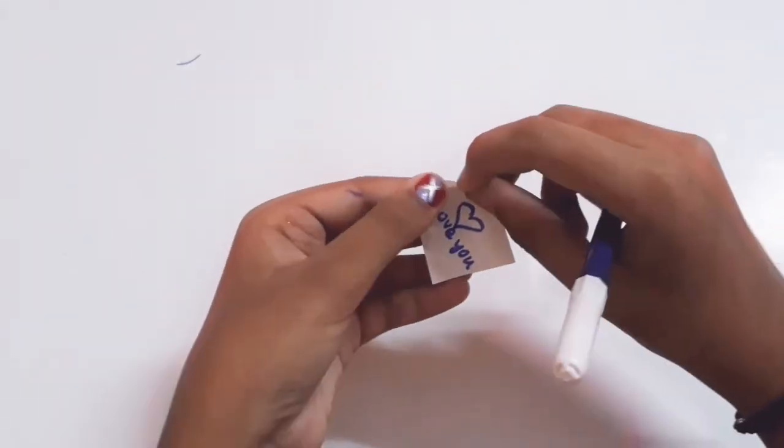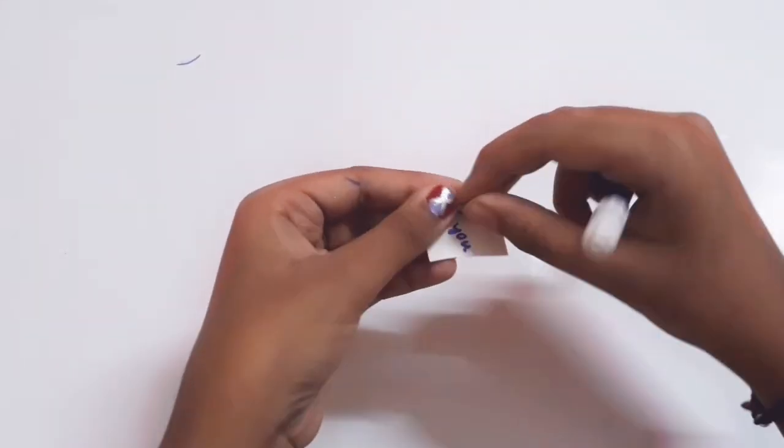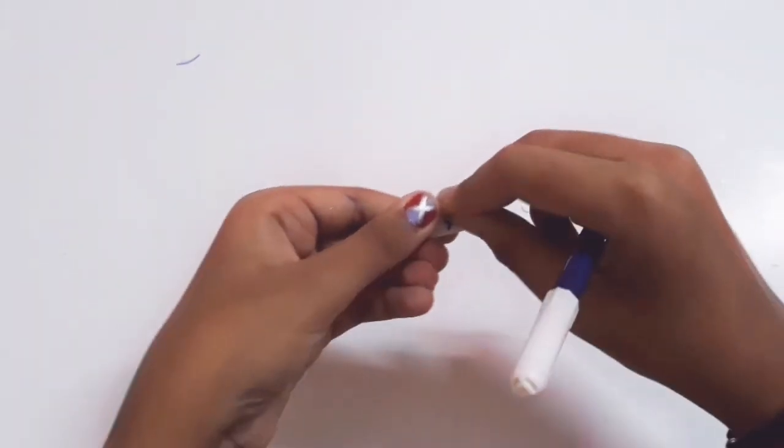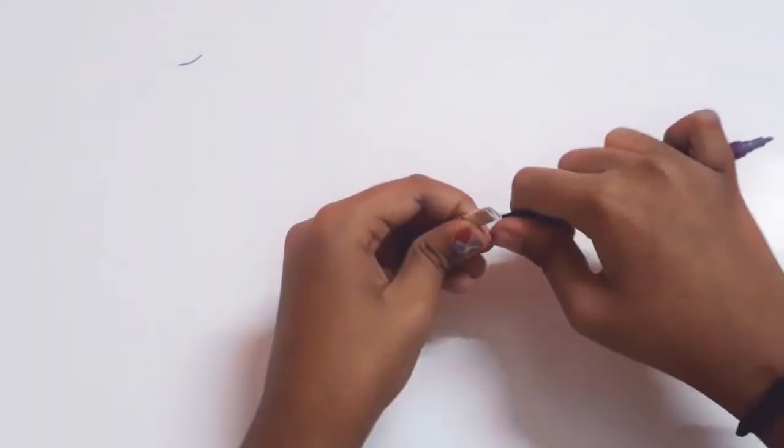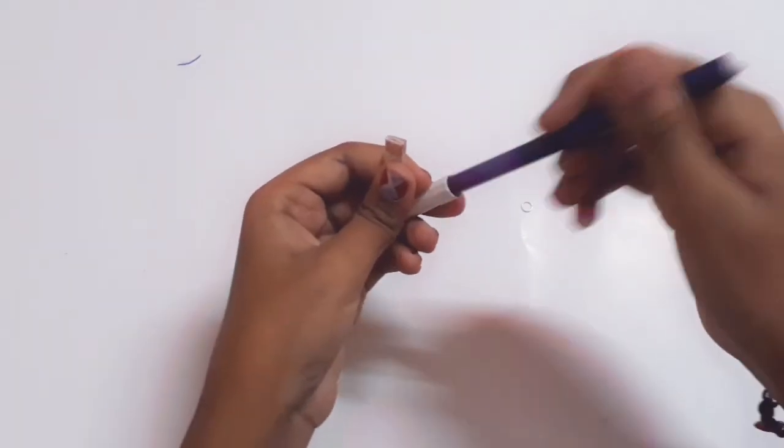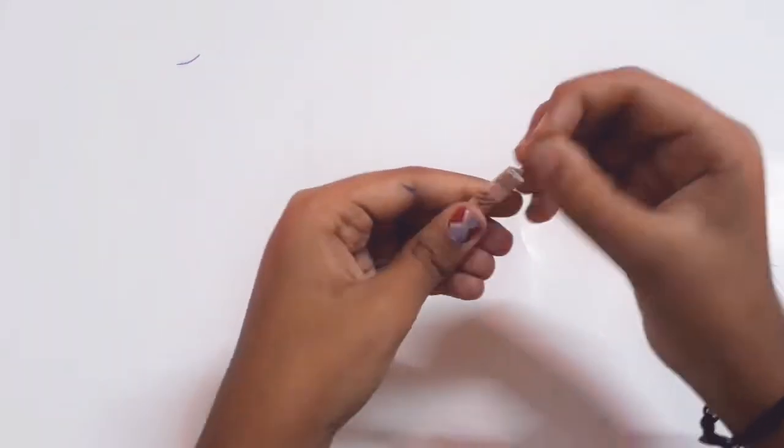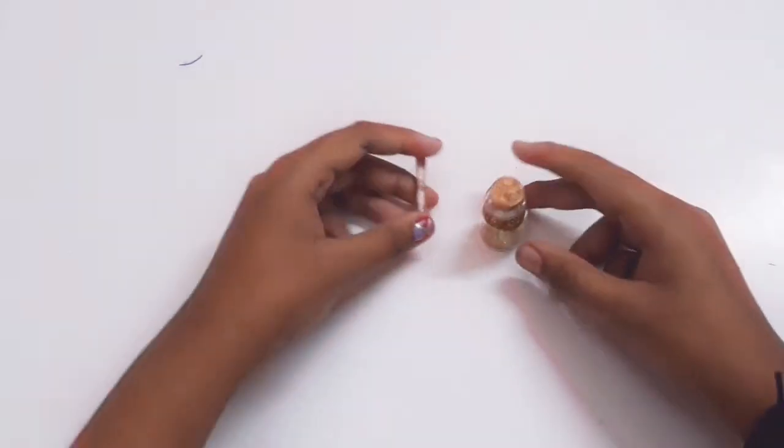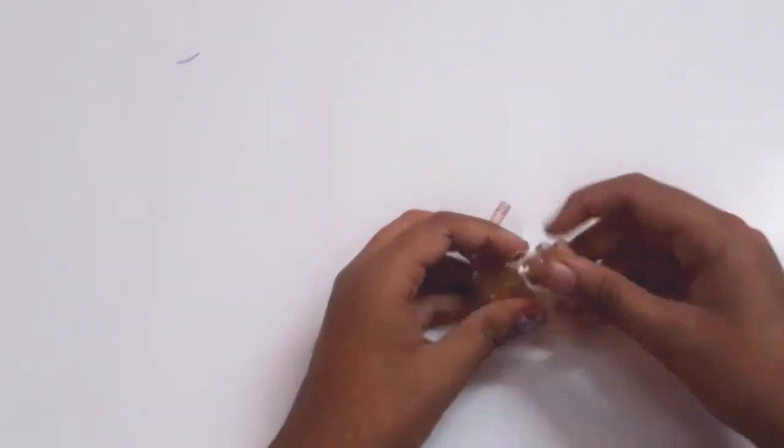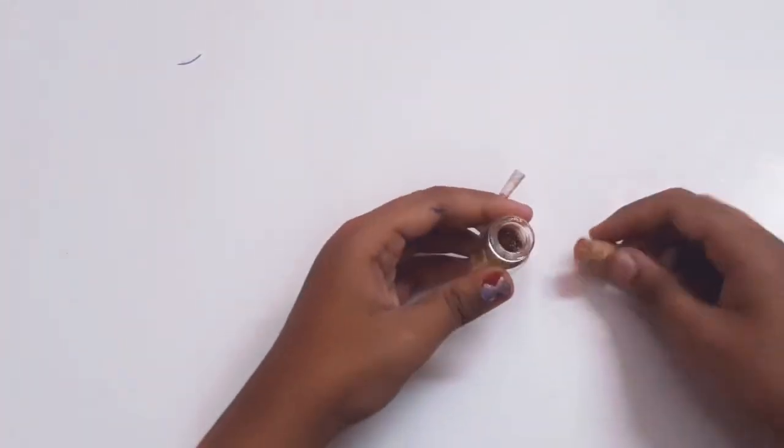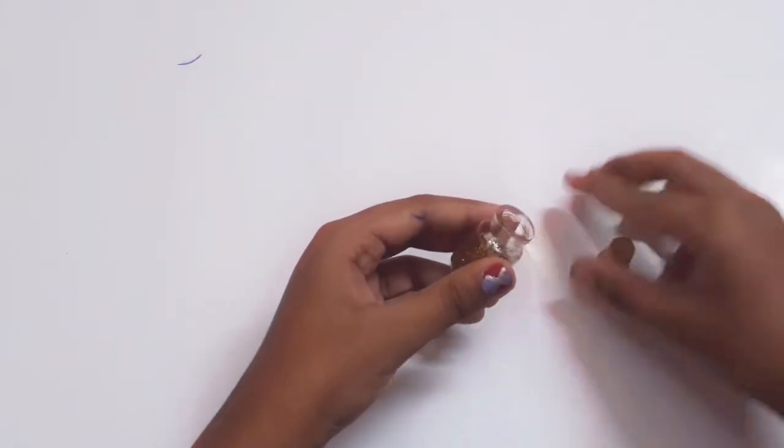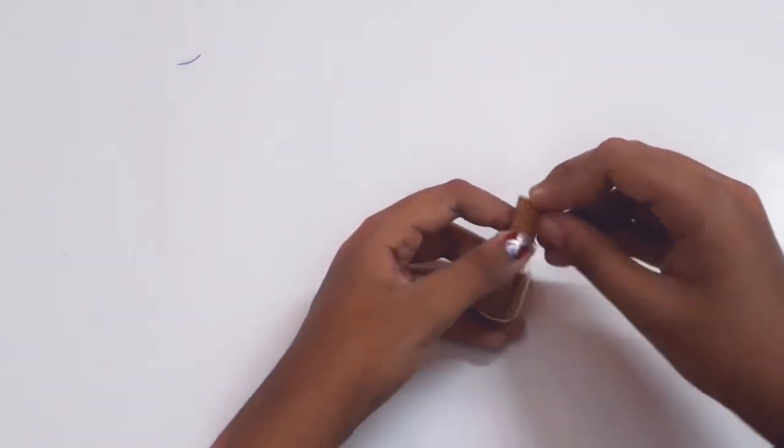After writing the note, you need to roll the paper and then put on the jump ring so that the note doesn't come off. And now all you have to do is put the secret message inside the bottle and gift it to your loved ones.